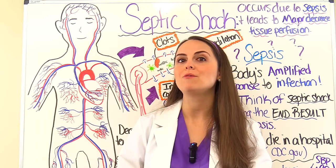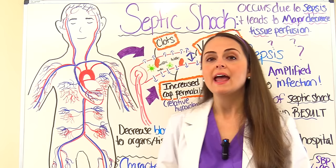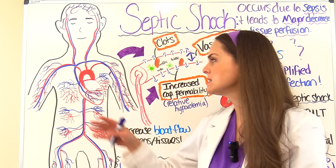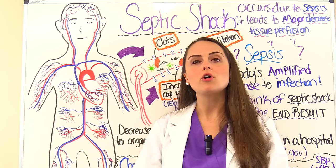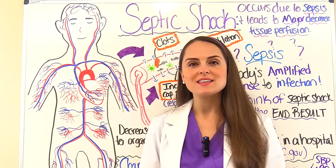Depending on the type of shock will determine why we are having this altered tissue perfusion. With cardiogenic shock, cells were being deprived of blood flow and oxygen because there was an issue with the heart — most commonly a myocardial infarction has damaged the heart and it can no longer maintain cardiac output. With septic shock it's a little bit different.